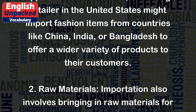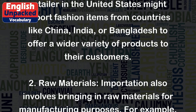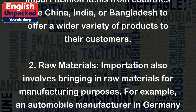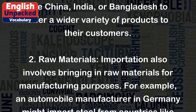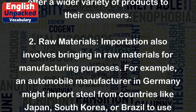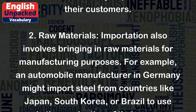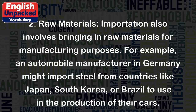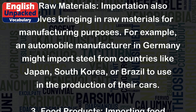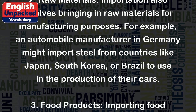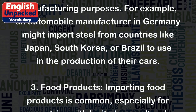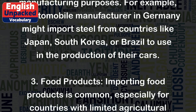Raw Materials: Importation also involves bringing in raw materials for manufacturing purposes. For example, an automobile manufacturer in Germany might import steel from countries like Japan, South Korea, or Brazil to use in the production of their cars.